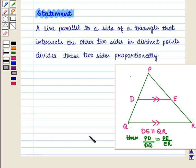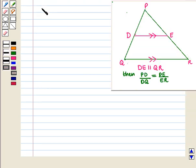Now we are going to prove this theorem. In triangle PDE and triangle PQR, it is given that DE is parallel to QR.